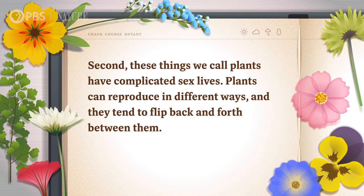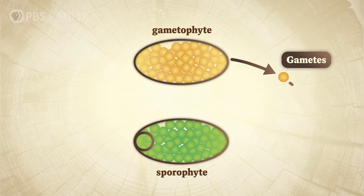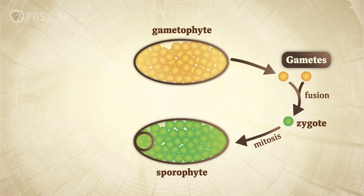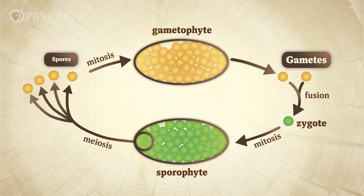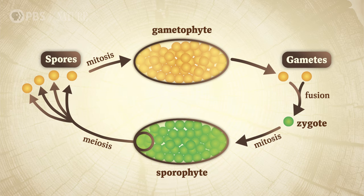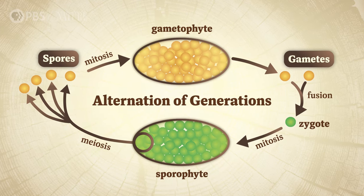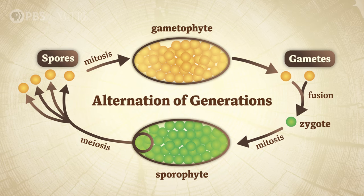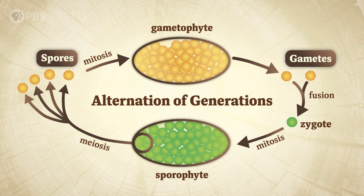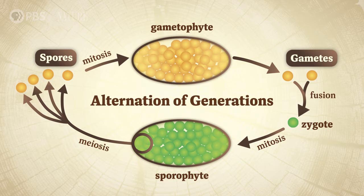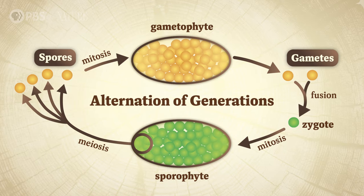Second, these things we call plants have complicated sex lives. Plants can reproduce in different ways, and they tend to flip back and forth between them. One moment they're swapping sex cells with each other; another, they're releasing reproductive cells called spores. This cycling between sexual and asexual phases is called the alternation of generations, and it helps keep plants flourishing — from granddaddy succulent to great grandbaby succulent and even beyond that.